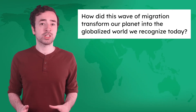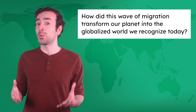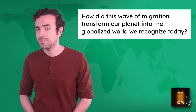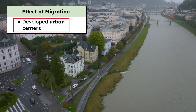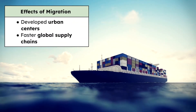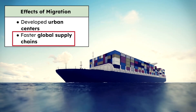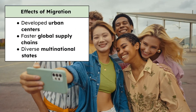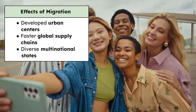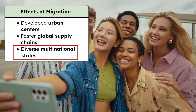Rural to urban migration developed urban centers into hubs of economic and cultural activity. Improved technology also brought global supply chains to the next level, as industrialized countries began to trade goods at a faster rate. International migrants seeking work changed many countries into the diverse multinational states they are today — that's probably why there's a Mexican-American community in my city, and why this Mexican restaurant exists on this street today.